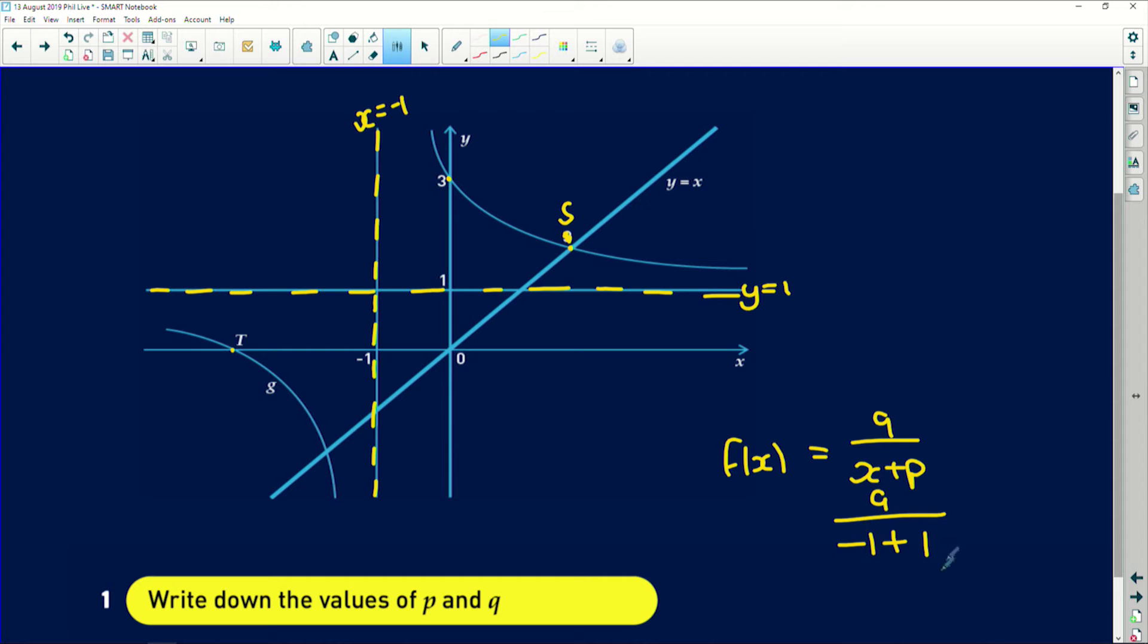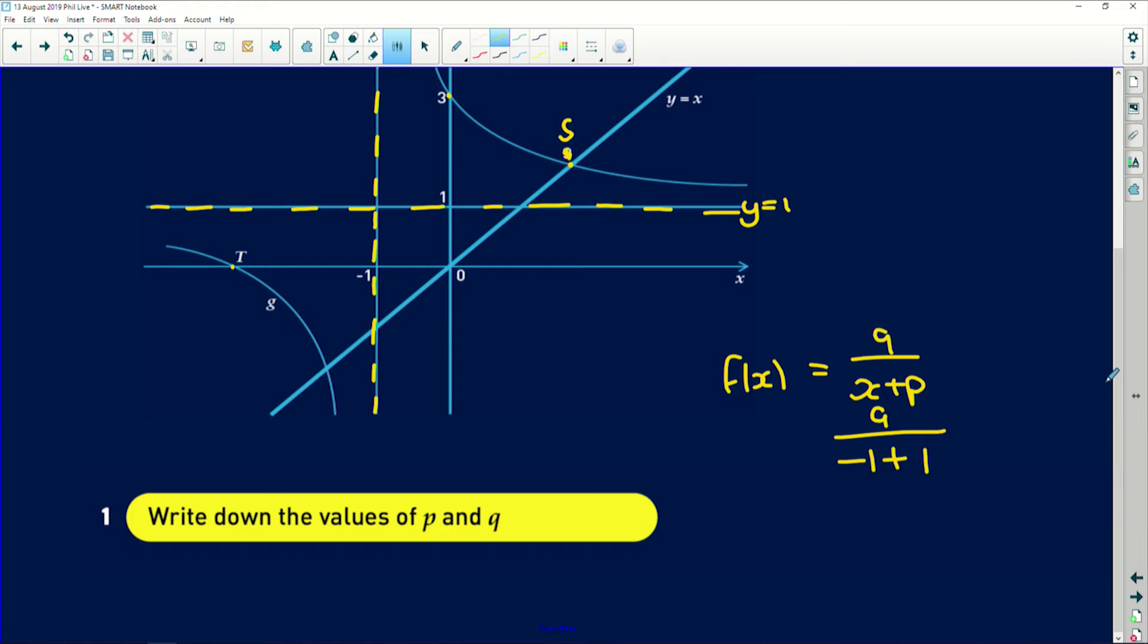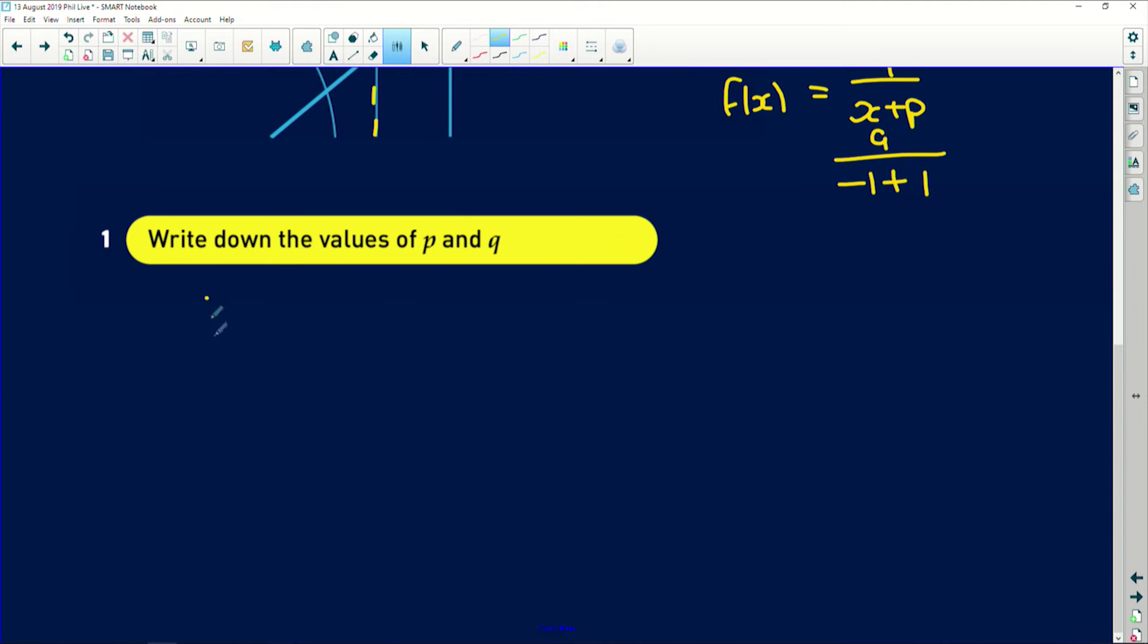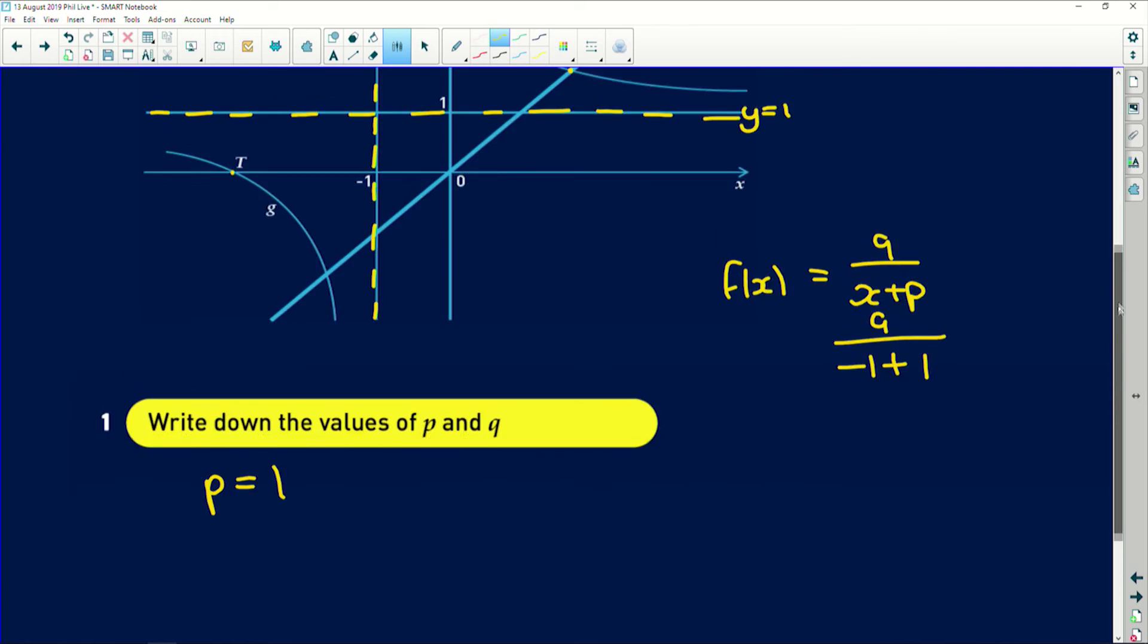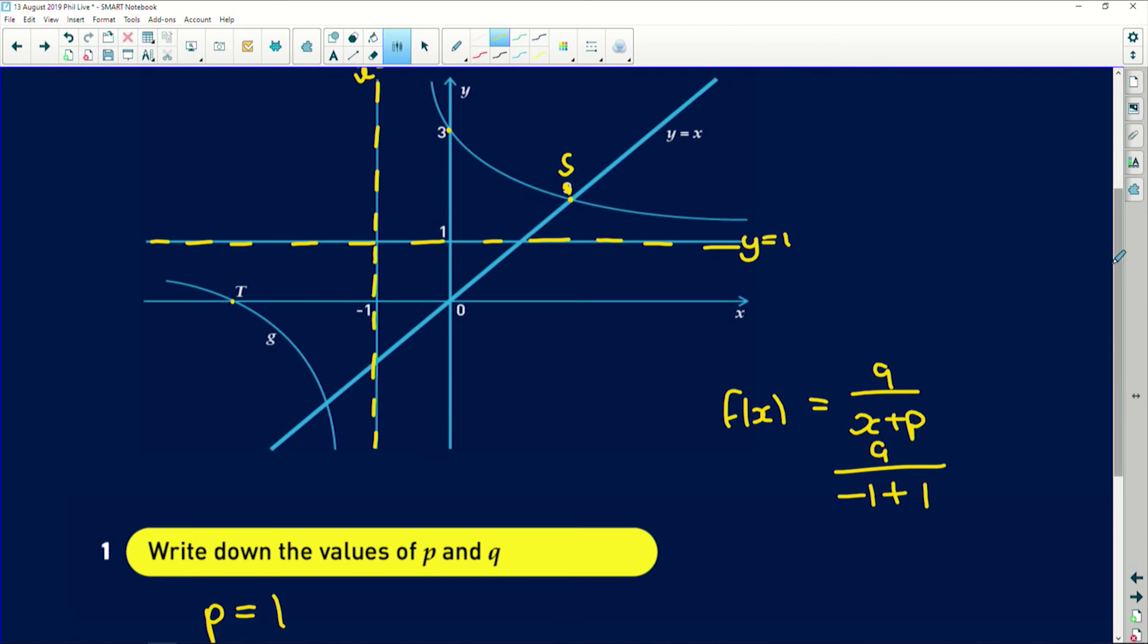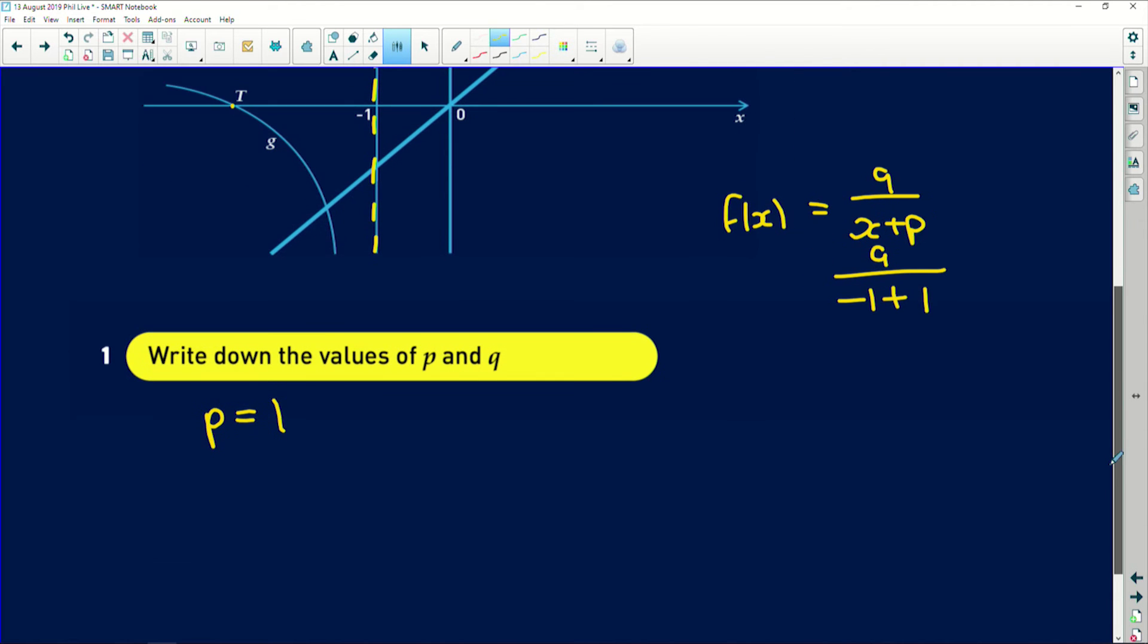We would have to have 1 over there at p, and that would give us a denominator of 0, which means it's undefined. So p is 1. This is the opposite sign but same value of that vertical asymptote. q is exactly that value over there. It is y equals 1, so q is equal to 1, not 0.